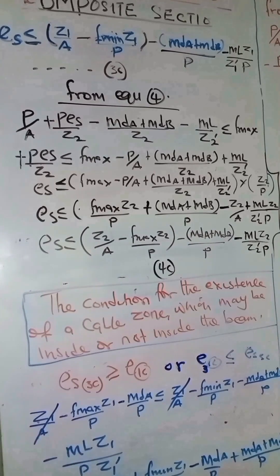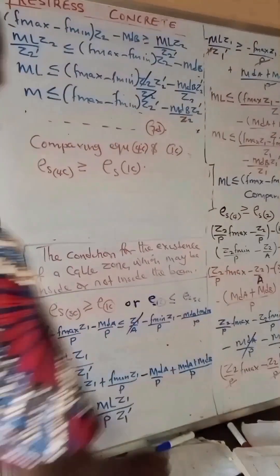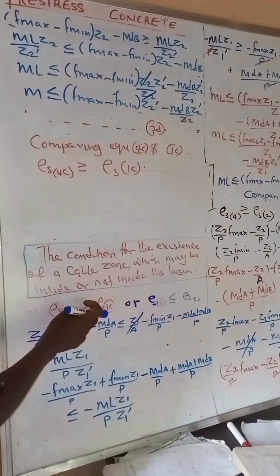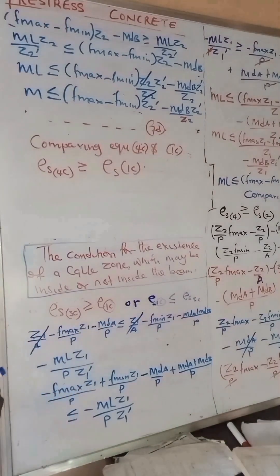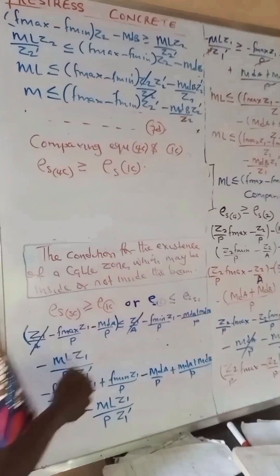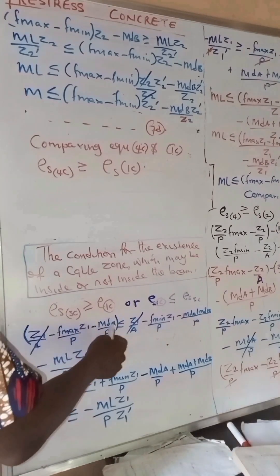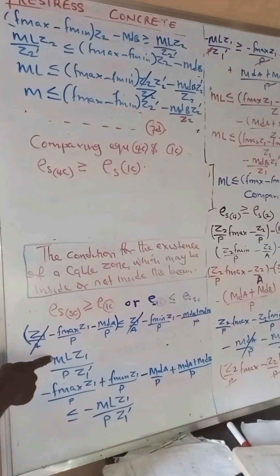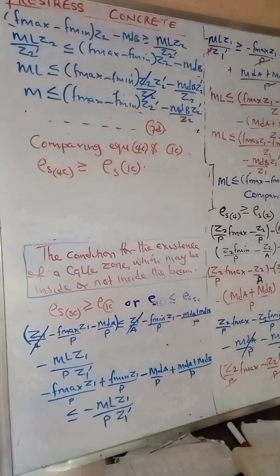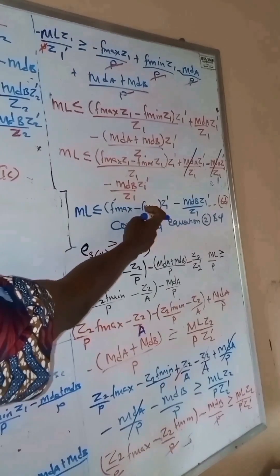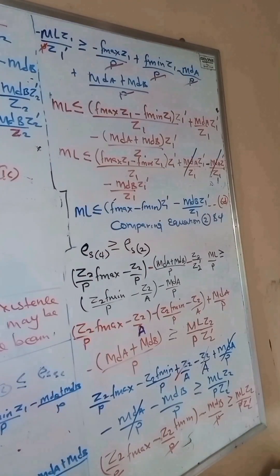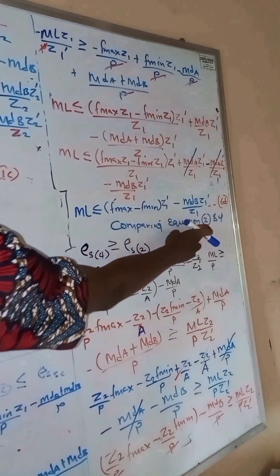Comparing equation 3c with equation 1c: this is the expression for equation 3c and this is the expression for equation 1c. Solving for M_L — the live load moment — we collect like terms and eventually obtain: M_L = (f_max − f_min) × Z1_composite, where Z1_composite is the sectional modulus with respect to fiber one of the composite section. We call this equation 6d.